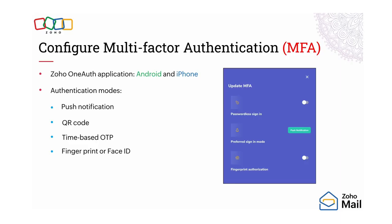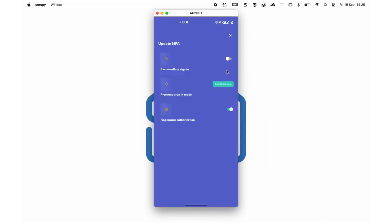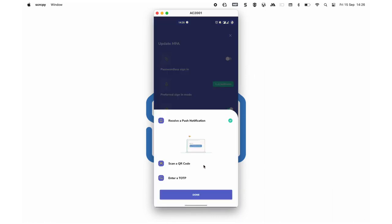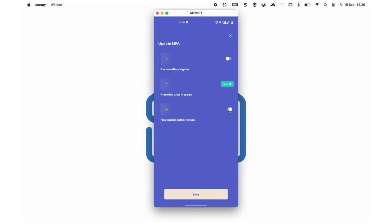Now let us see how you can change the MFA mode for your account. You can choose QR code or time-based OTP other than push notification. You can also enable fingerprint or face ID authorization. To change the mode, go to the Zoho OneAuth app on your mobile device and click on the pencil icon. Click the button beside Preferred Sign In Mode, choose Scan a QR Code, and click Done. You can also enable or disable fingerprint authorization. Click Save.